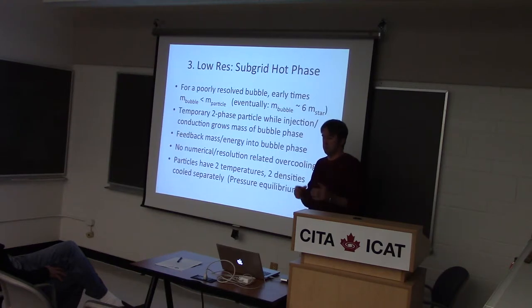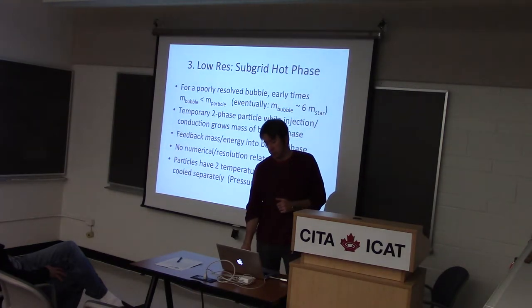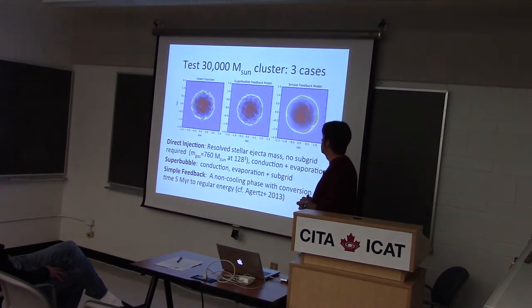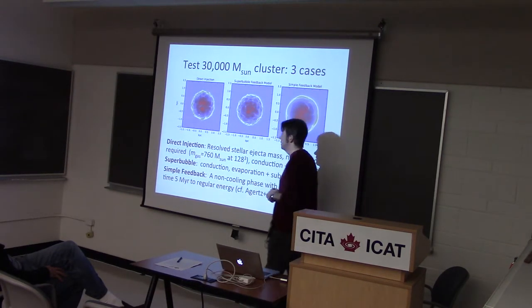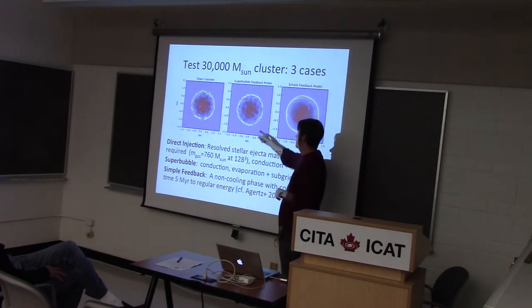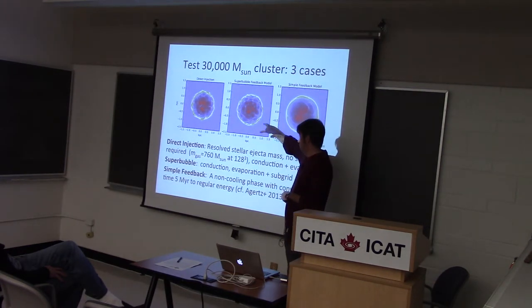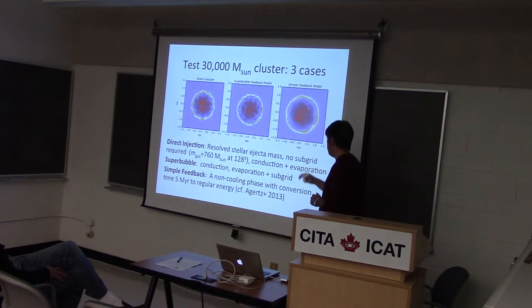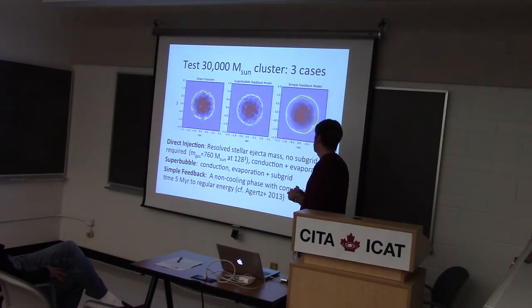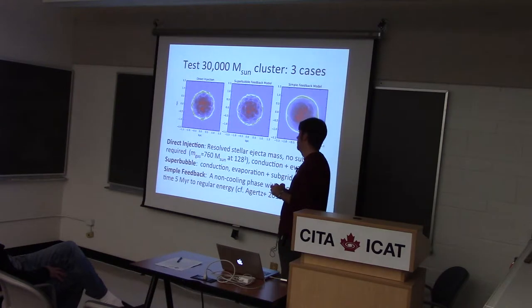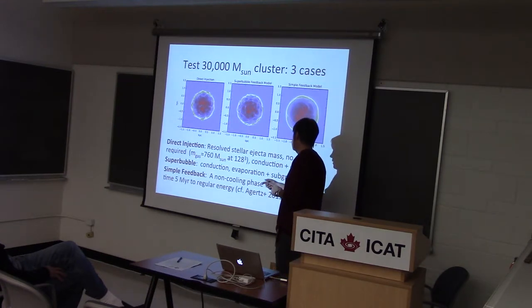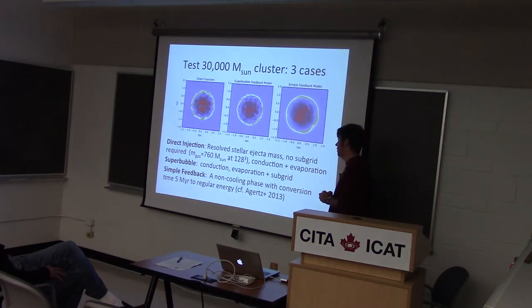This was necessary to extend the model to lower resolution. Here's a test: it's about a 30,000 solar mass cluster, three different cases. Direct injection — where we don't have any sub-grid model — if we have enough resolution it works just fine. The sub-grid model included allows us to take this to lower and lower resolution. And here's what's typically done, where you essentially just inject your supernova energy into your resolution element, whatever that happens to be — modeled on what Oskar Agertz has been doing lately, a very common approach now.